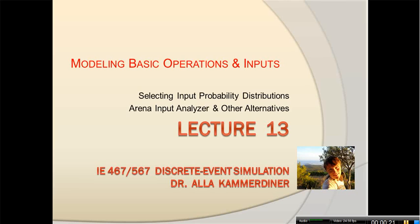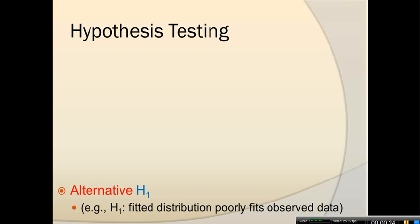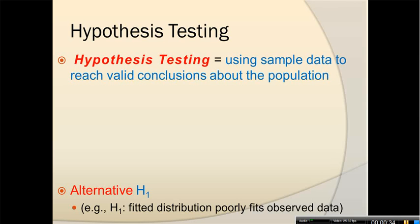We will continue talking about what we discussed earlier and focus a little more on some of the basics. So we'll talk about hypothesis testing. Hypothesis testing is basically using sample data to reach valid conclusions about the population. The testing is concerned with having two different alternatives: hypothesis H0 and alternative H1. We're actually trying to distinguish between H0 and H1.